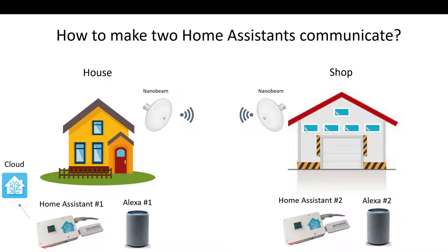I like to mess around. My architecture is that I've got a house and then about 300 feet away I've got a shop. I connect the house and the shop with a couple of Ubiquiti nanobeams — they work great, it's just like a cable. But it's far away enough where the Z-Wave or Zigbee signal just won't travel, so I've got to have another receiver.